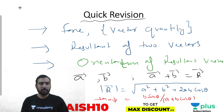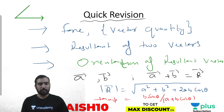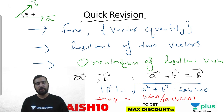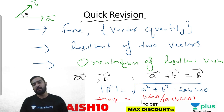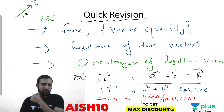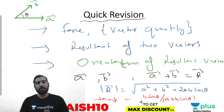Yesterday, the orientation of vector A and vector B was taken such that tan φ = B sinθ / (A + B cosθ), giving the resultant and its orientation. Aaj ispe kuch questions discuss honge, aur usse pehle thoda sa aage padhenge. Today's topic is vectors in the rectangular Cartesian system.